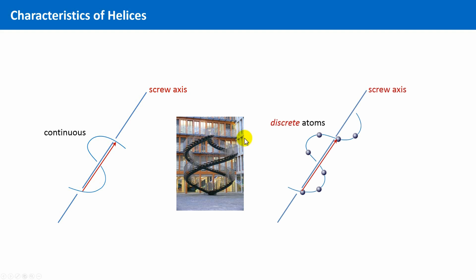And, as crystals are composed of discrete atoms, you can imagine that helices and crystals are composed of discrete units. This has of course an impact on the rotational symmetry part of this combined symmetry operation.